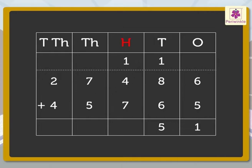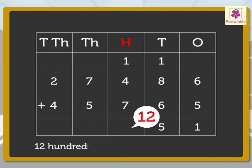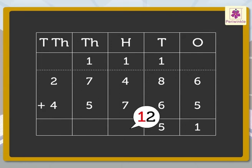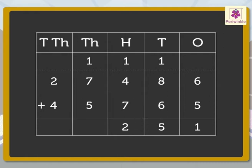Now add the hundreds: 1, 4 and 7. We get the number 12. Regroup the 12 hundreds to 1 thousand and 2 hundreds. Carry the 1 thousand to the thousands column and write 2 in the hundreds column.